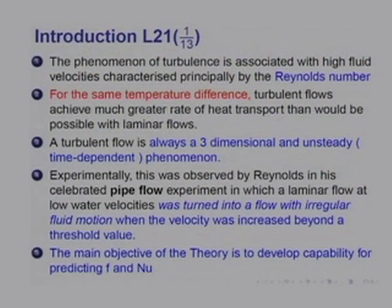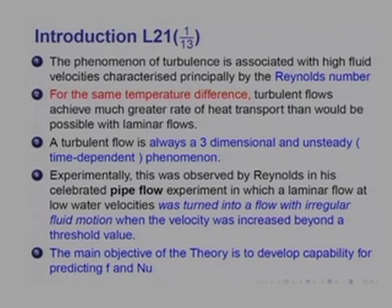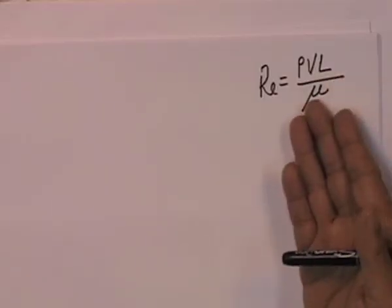The phenomenon of turbulence is associated with high fluid velocities, characterized principally by the Reynolds number. Reynolds number is equal to rho times velocity into some characteristic dimension L divided by the viscosity. It represents the ratio of inertial forces in the numerator to viscous forces in the denominator. For the same temperature difference, if you had a turbulent flow instead of a laminar flow, you would get a much higher rate of heat transfer — the heat transfer coefficient would be much greater in turbulent flow.